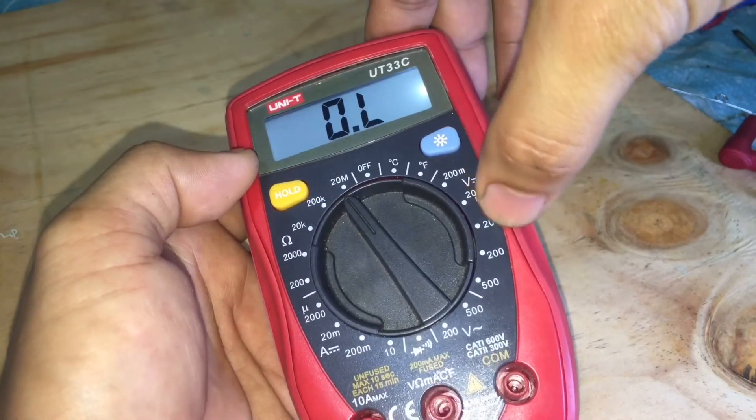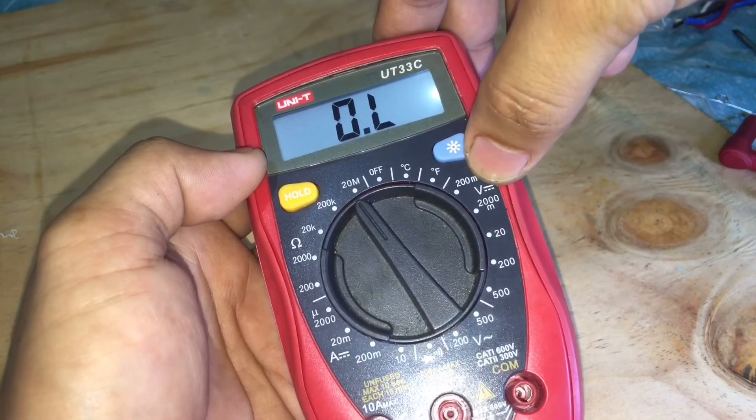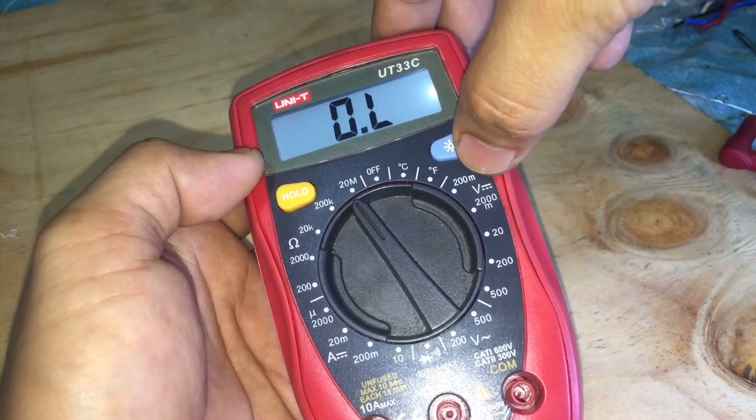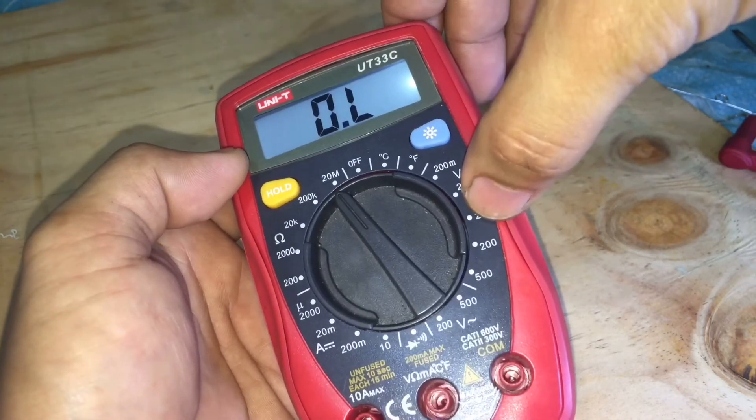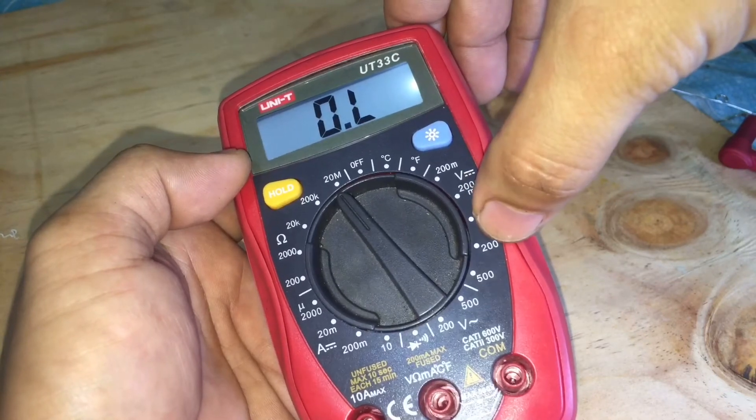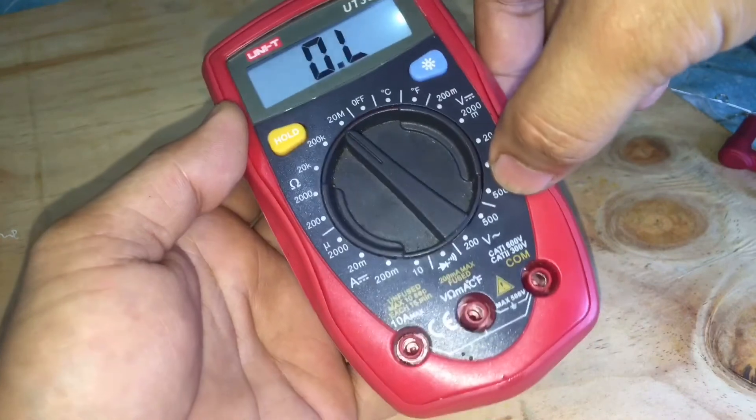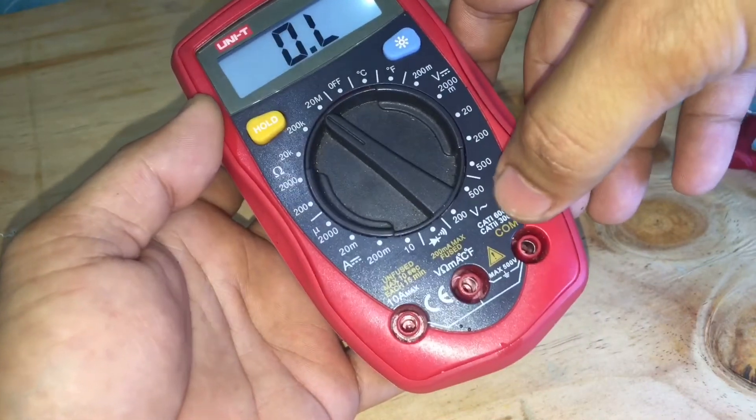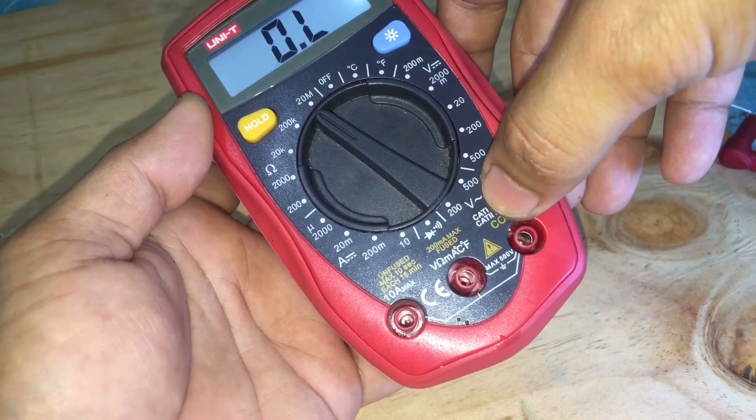Next, we have a DC current voltage meter. This is 200 millivolt, 2000 millivolt, 20 volt, 200 volt, 500 volt. And another one is the AC current. We have 500 volt and 2000 volt.